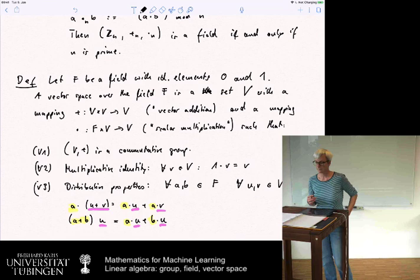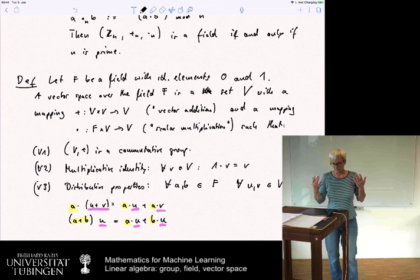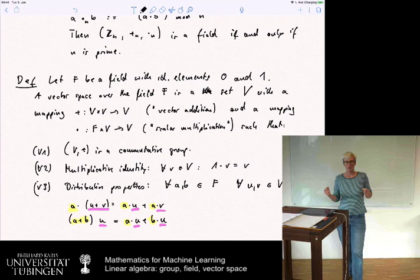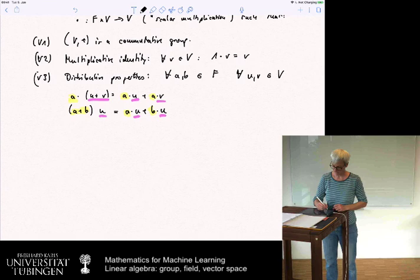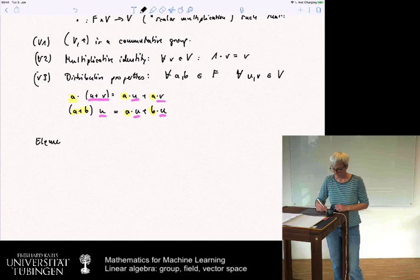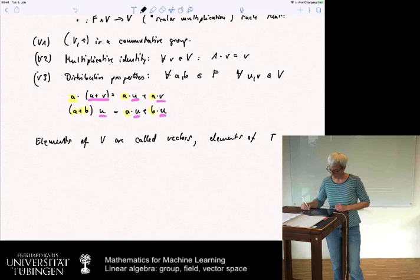Elements of the space V are called vectors, and elements of the space F are called scalars. The two standard cases are when the field is either the real numbers or the complex numbers, giving us a real or complex vector space.